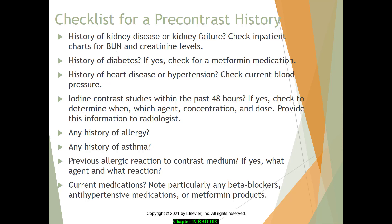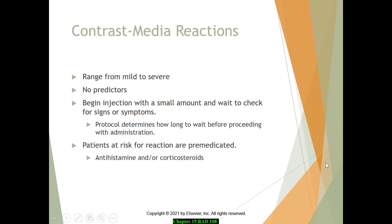The patient checklist includes: history of kidney disease or failure; history of diabetes and current medications; history of heart disease or hypertension with current blood pressure check; whether they've had another iodine study in the last 48 hours (such as a CT or MRI with contrast); any history of allergies especially shellfish; previous reactions to contrast media; history of asthma; and any current medications especially beta blockers or hypertensive medications.